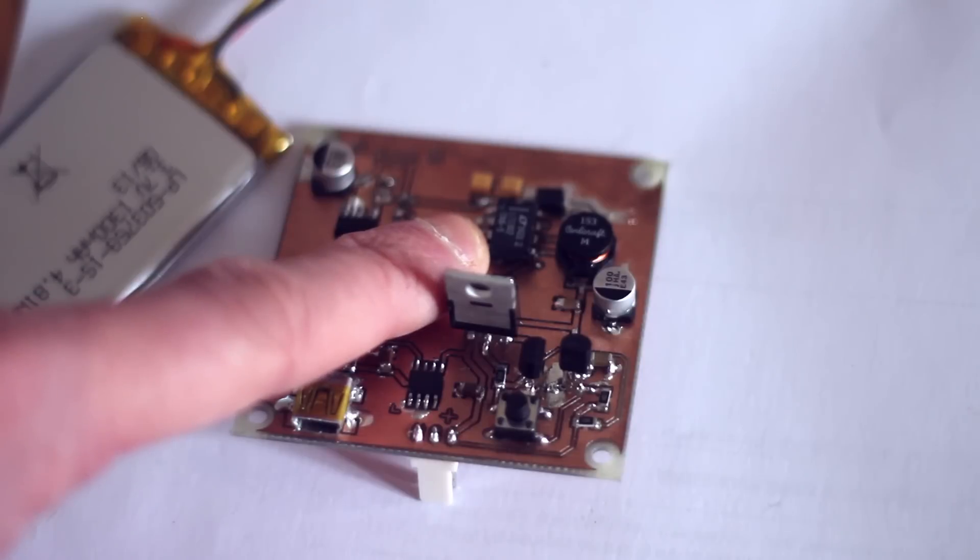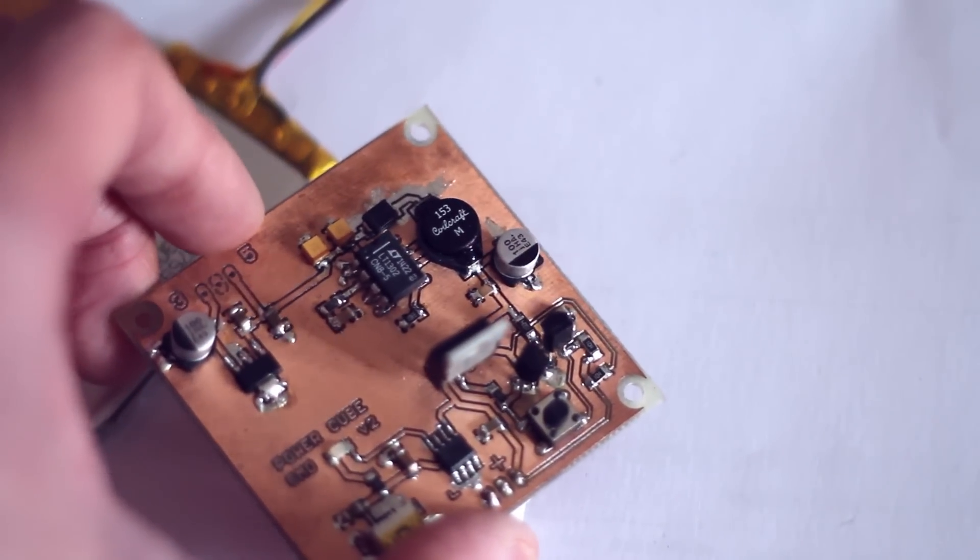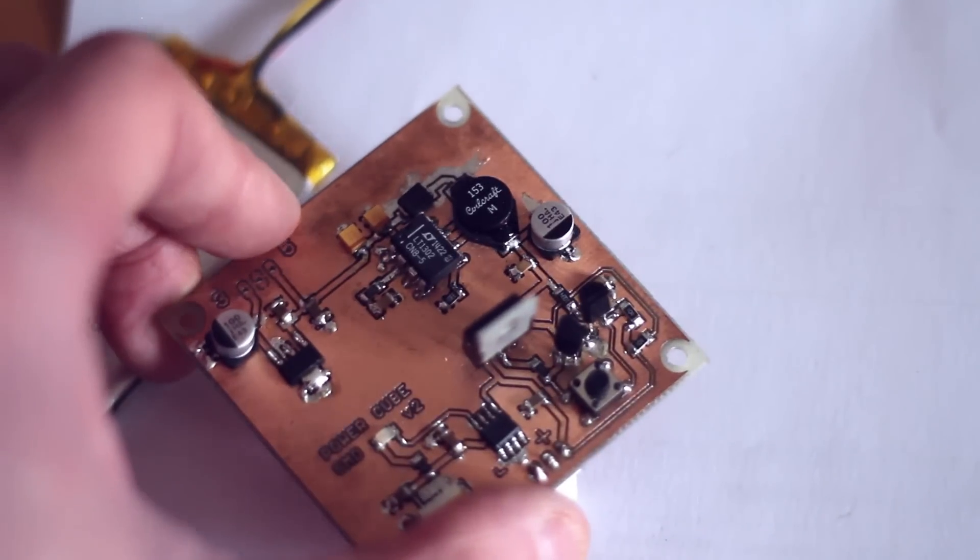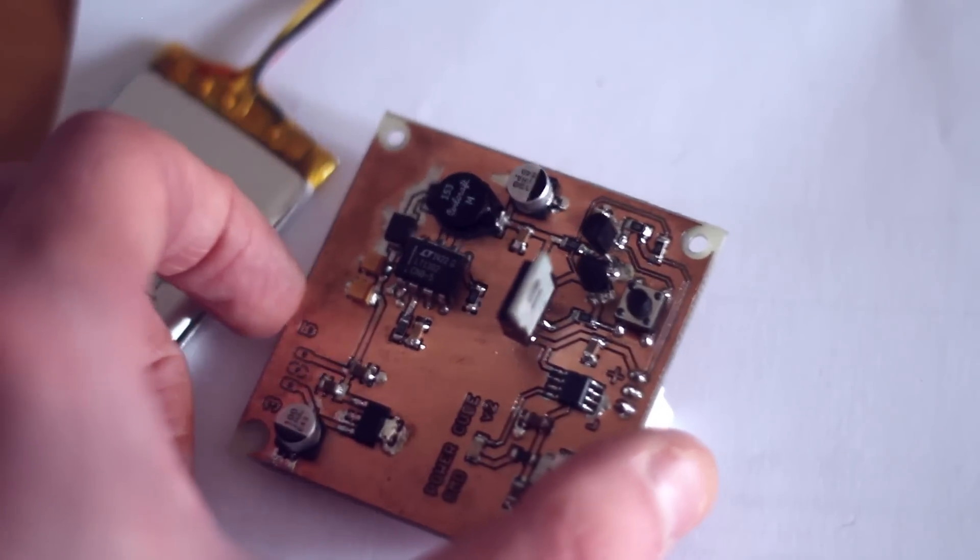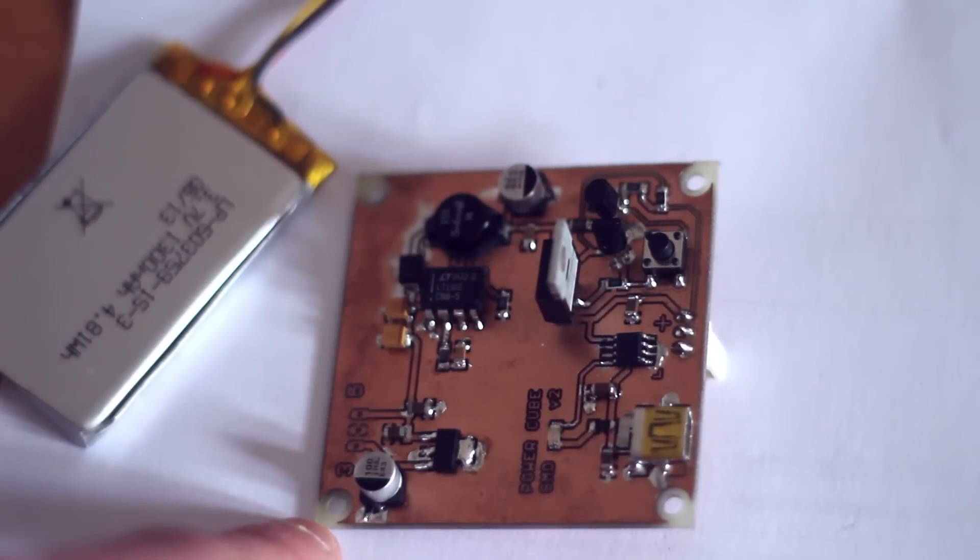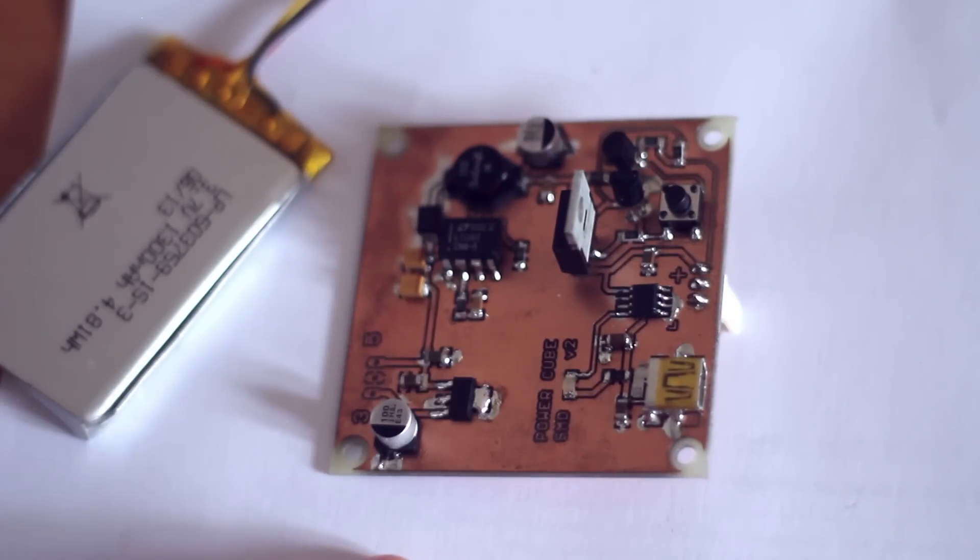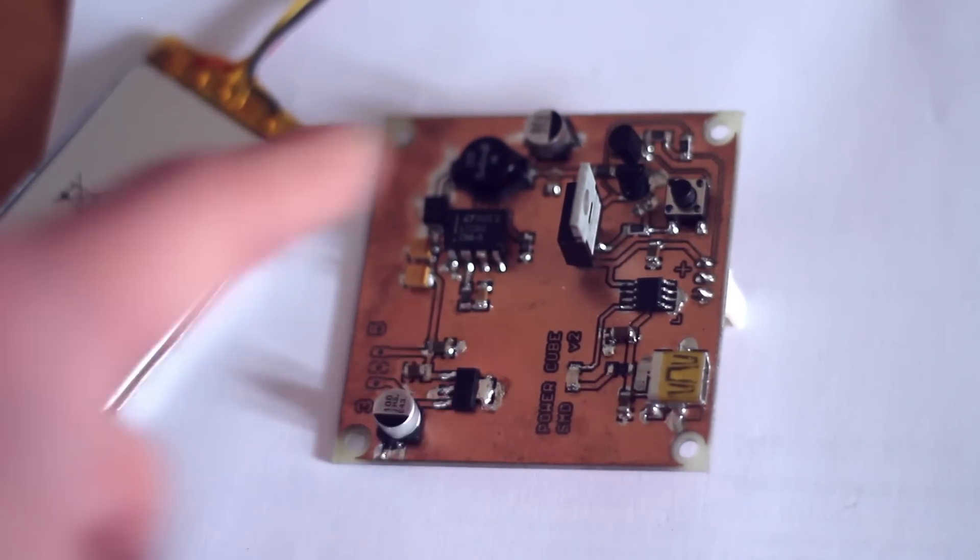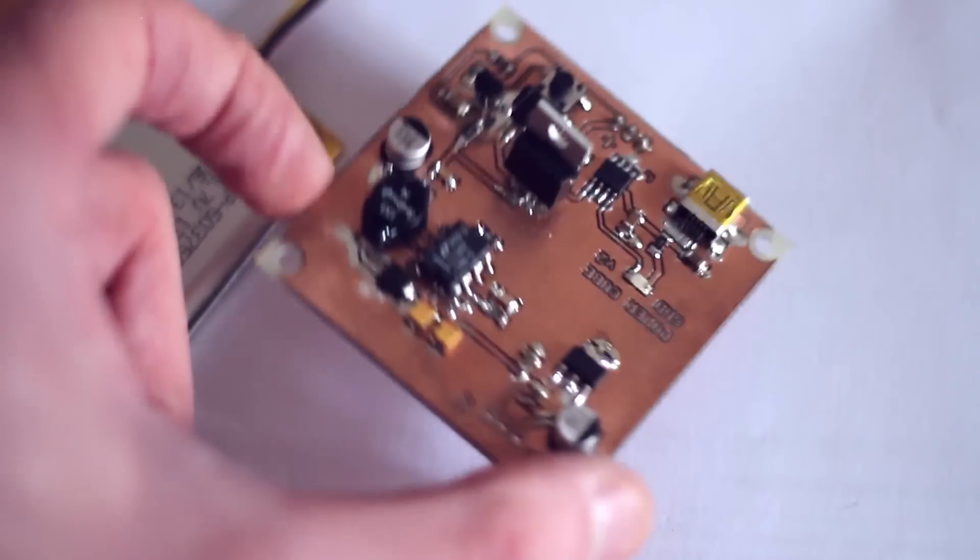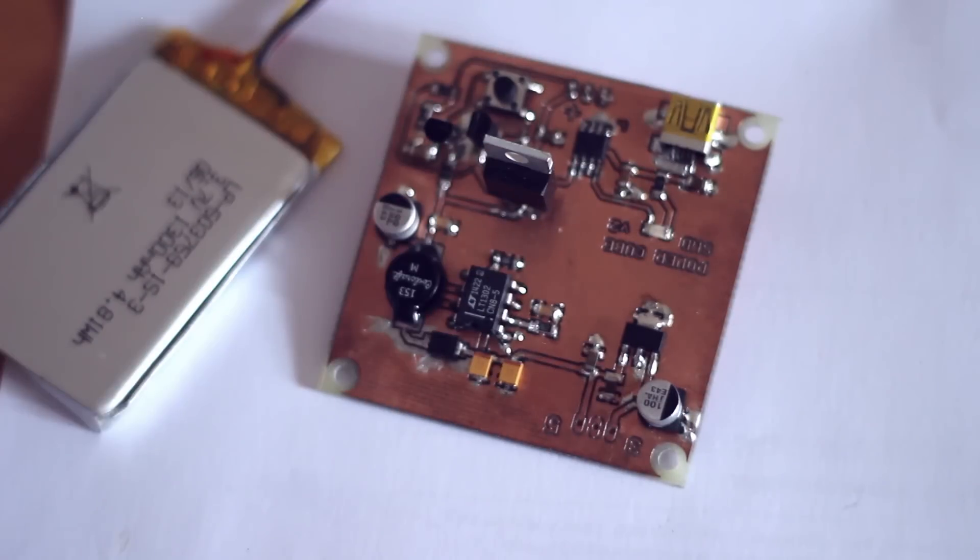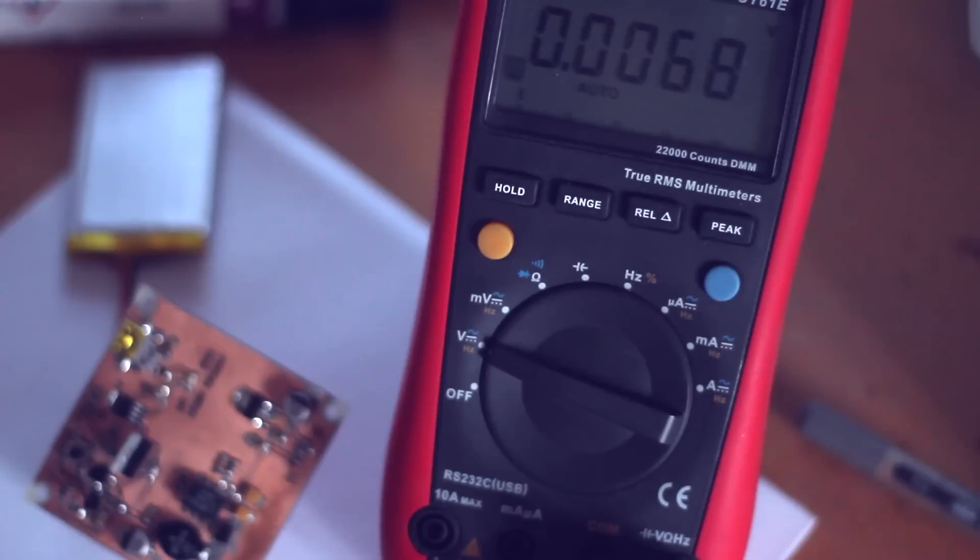We've also got the LT1302, which is a boost chip for anything from like 1.8 volts, but it'll be a minimum of 3 volts. We also have a small 3.3 volts regulator here. I can't remember the name of it there, and I'm also using some low ESR capacitors here just to make sure that any kind of voltage ripple we're getting is going to be minimized.